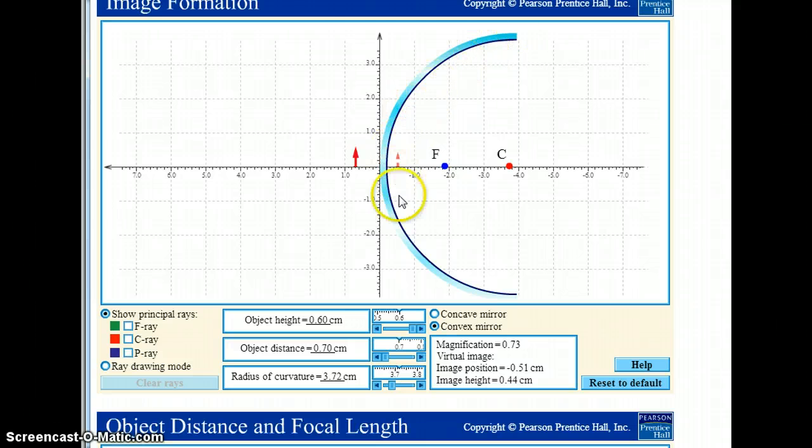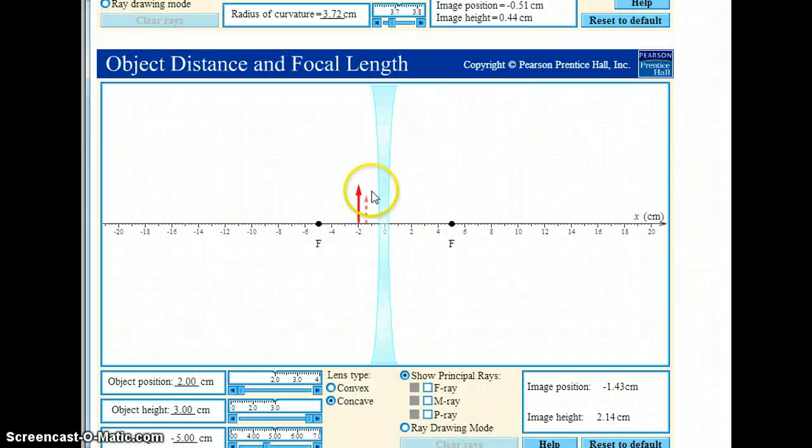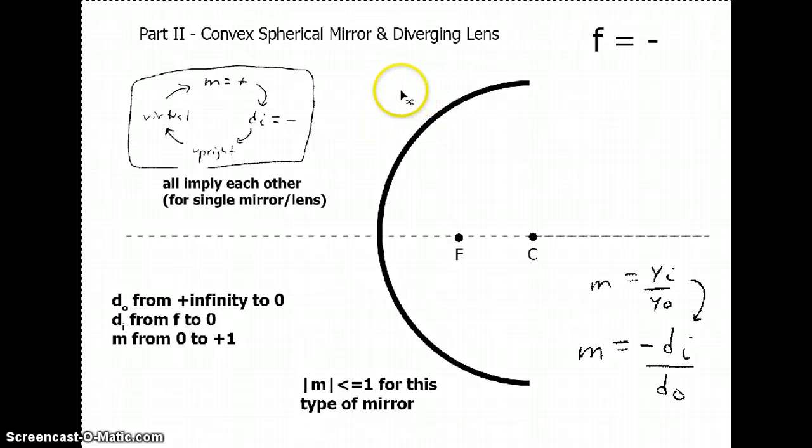Because over here, well first of all this is not a mirror, the shiny part is over here. And secondly you can see that this is of course a different shape, whereas over here it's still thinner in the middle regardless if you send light this way or this way. So as kind of a master summary of the convex spherical mirror and the diverging lens, what do you get?